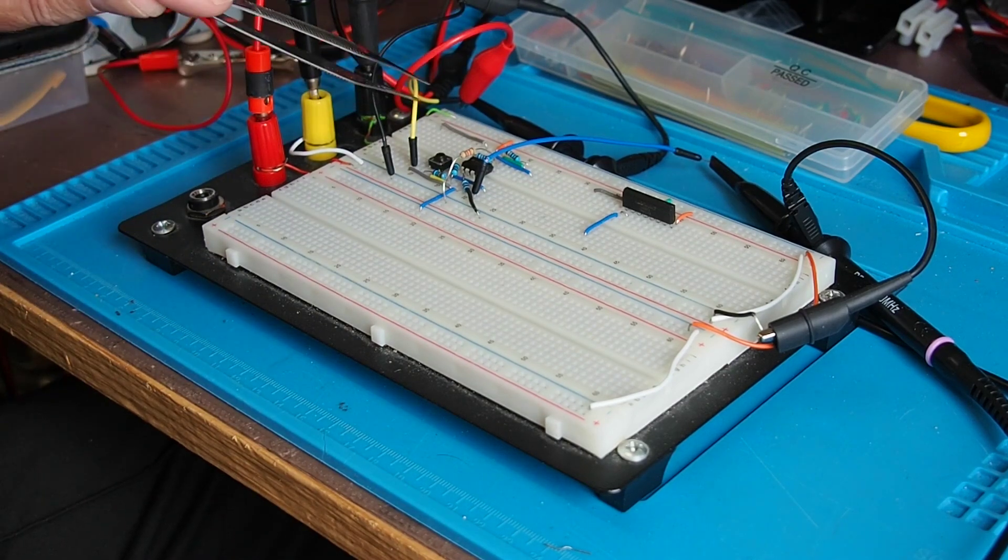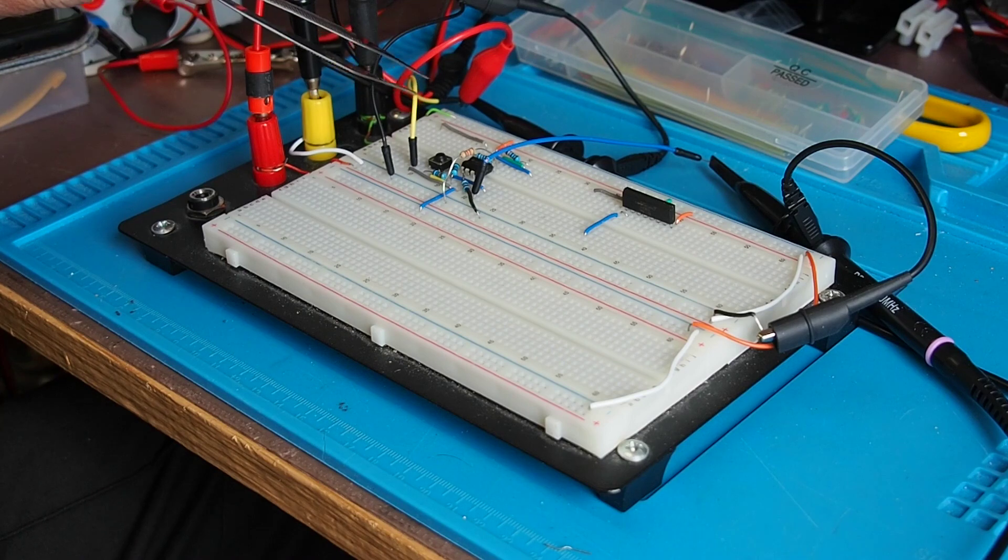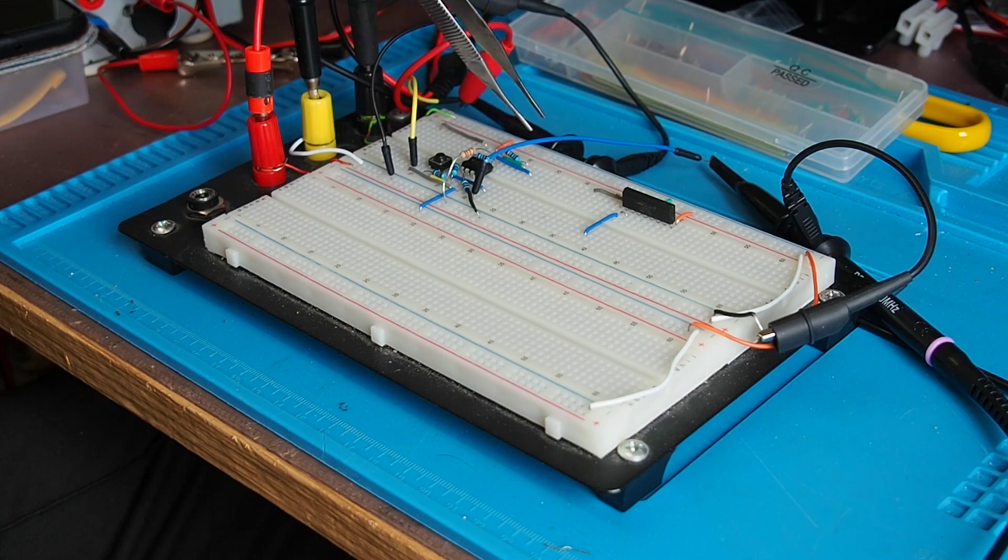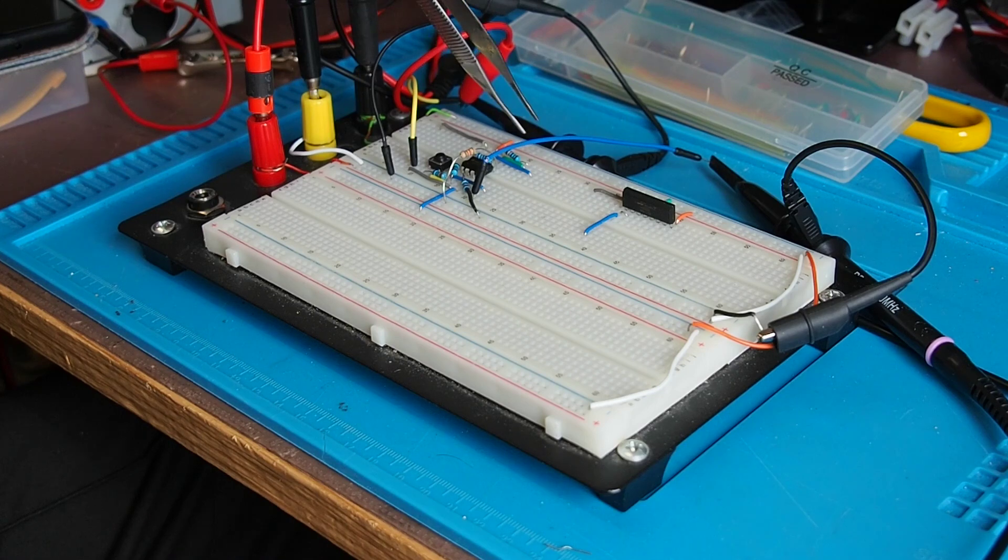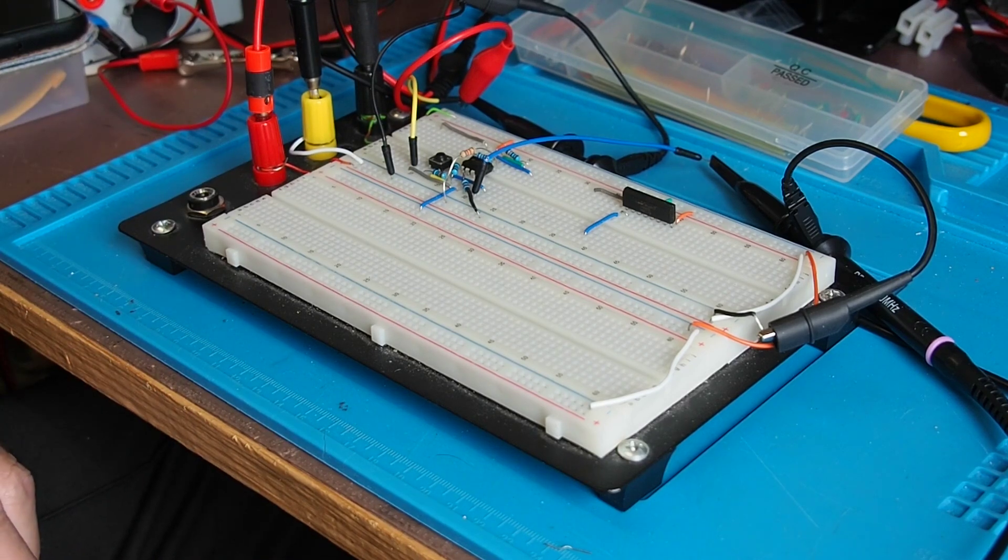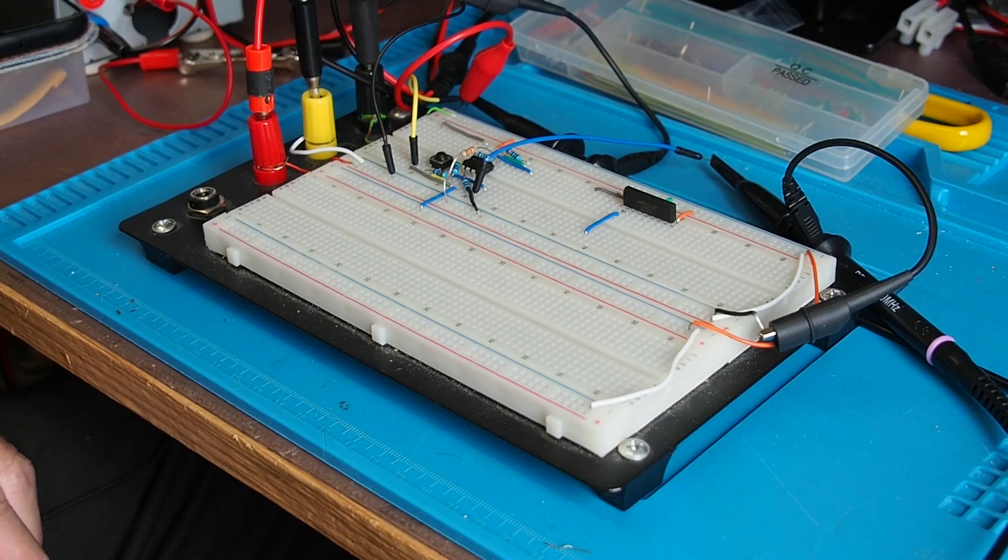I've got the input coming in on this yellow jumper from the signal generator and I've got the output going to the scope second channel on this blue jumper here. I've also monitoring the signal generator output with this yellow input wire using channel 1 of the scope. So I'm going to reposition the camera so we can look at the scope.